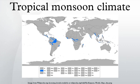Tropical monsoon climate, occasionally also known as a tropical wet climate or tropical monsoon and trade wind littoral climate in climate classification, is a relatively rare type of climate that corresponds to the Köppen climate classification category Am. Tropical monsoon climates have monthly mean temperatures above 18 degrees Celsius in every month of the year and feature wet and dry seasons, as tropical savannah climates do.